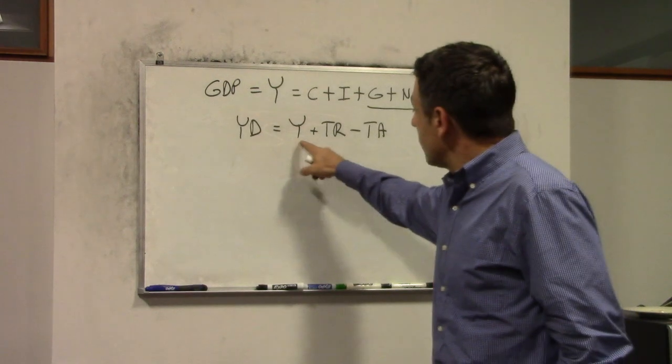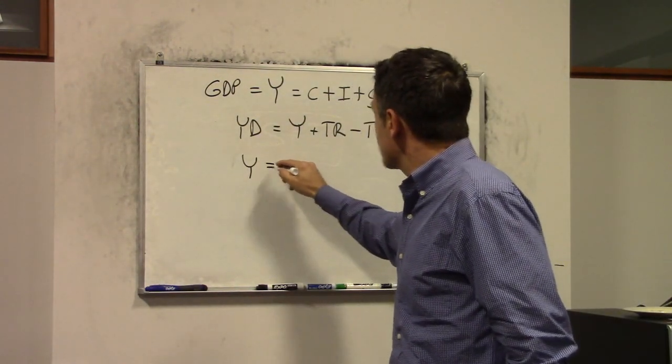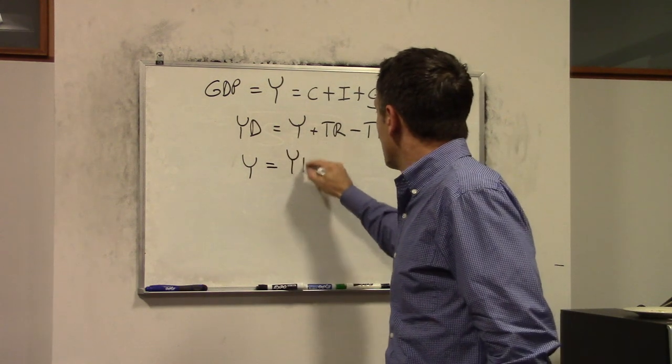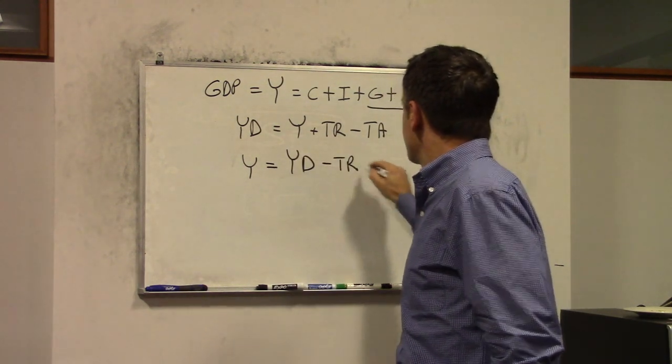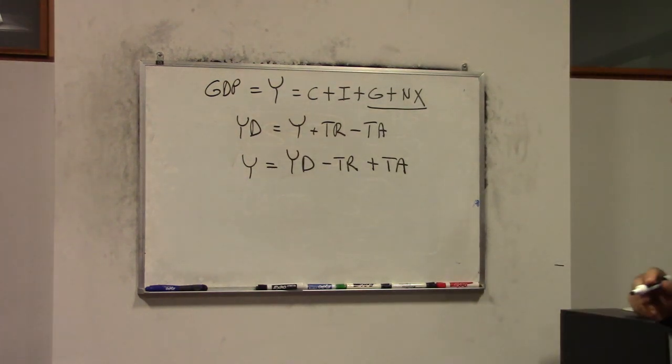Now you see that if we solve for Y, we will have the following expression: YD equals Y plus TR minus TA. But what's disposable income? Well, we already discussed that.